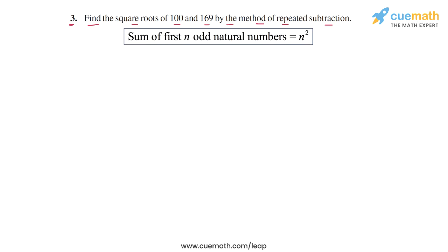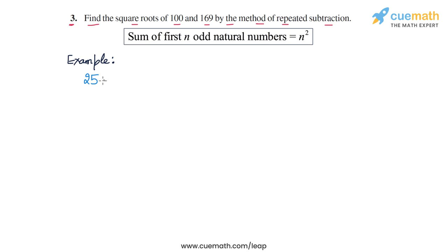Let's take an example to understand this method. Before we go to the actual question, let's first take the perfect square number 25 and subtract successive odd natural numbers from it.